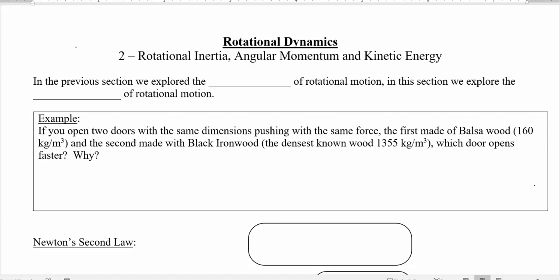In the previous section we looked at how kinematics works for rotating objects — rotational kinematics — which describes angular velocities, angular rotation, angular acceleration, and so on. But now we're going to take a look at the dynamics, which gets to the story behind those accelerations: the forces, the torques, momentum, energy, all that kind of stuff.